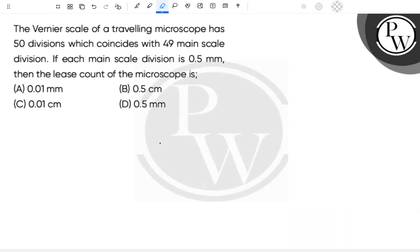Hello students, let's see the question. The Vernier scale of a traveling microscope has 50 divisions which coincide with 49 main scale divisions. If each main scale division is 0.5 mm, then the least count of the microscope is?